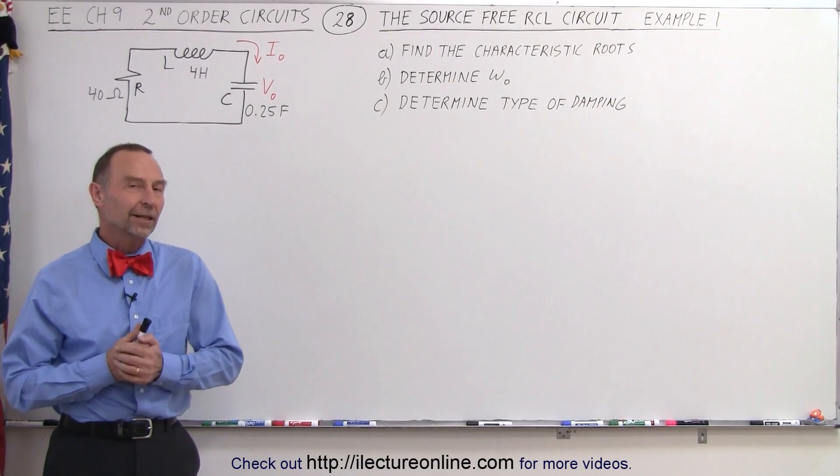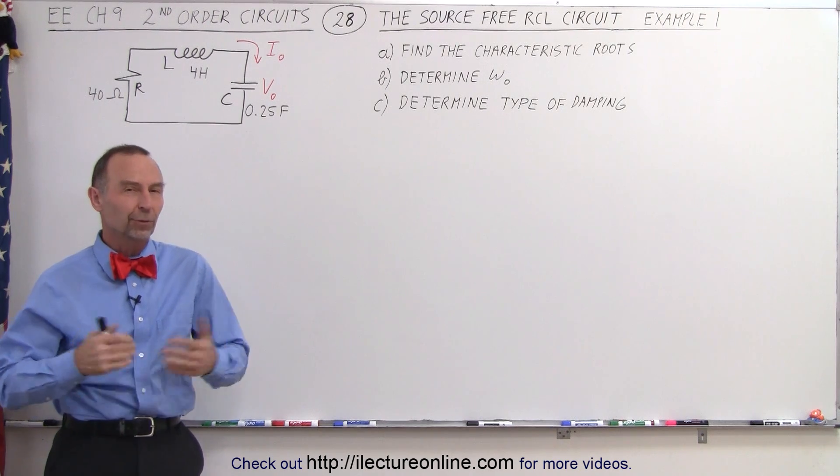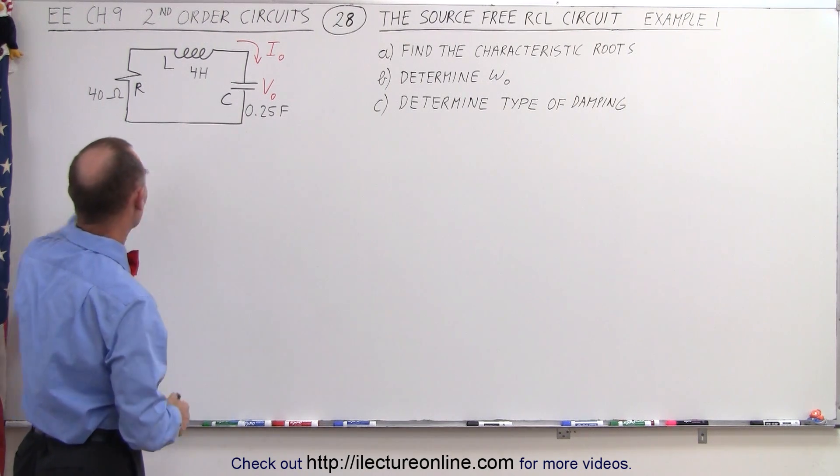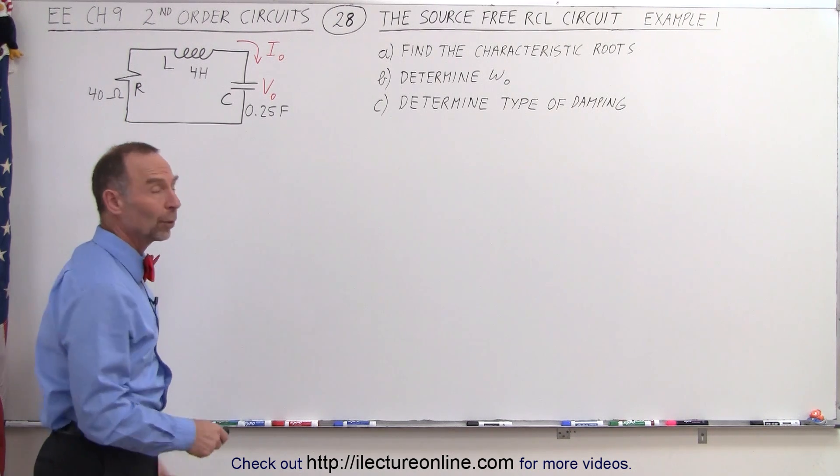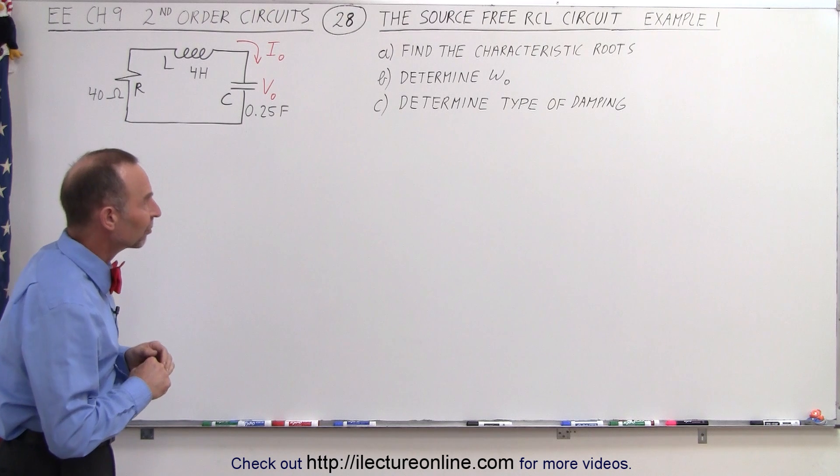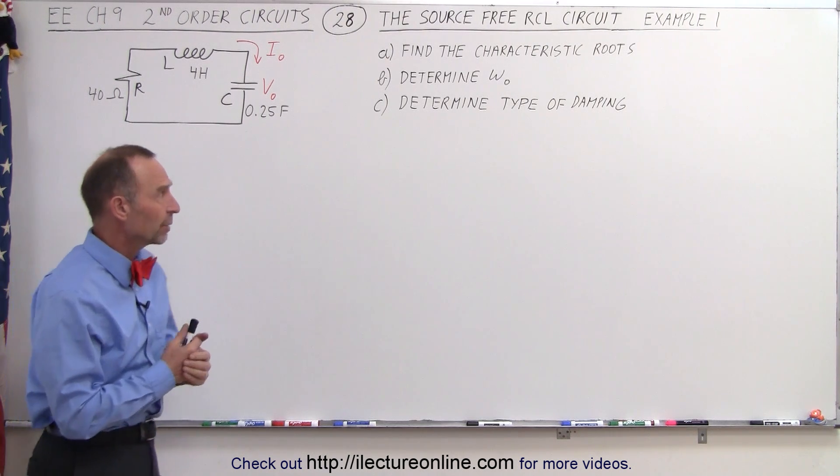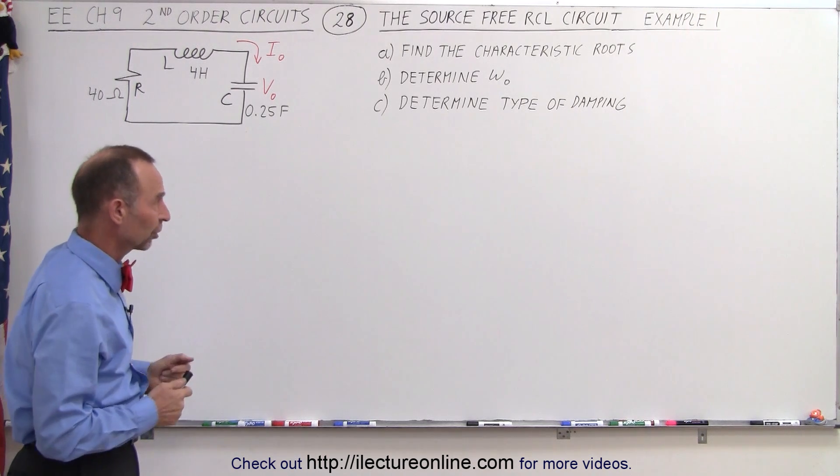Welcome to our lecture online. Now let's get a better understanding of a source-free RCL circuit by doing some examples. Let's start with a simple example. Here we have a circuit with a 40 ohm resistor, a 4 Henry inductor, and a 1 quarter farad capacitor. They want us to find the characteristic roots, the natural frequency, and determine the type of damping we have in the circuit.